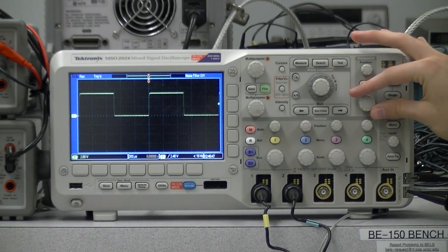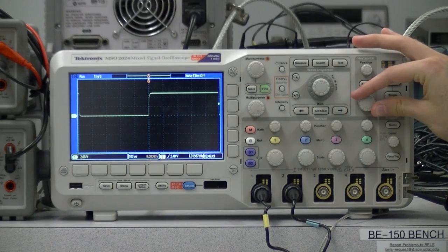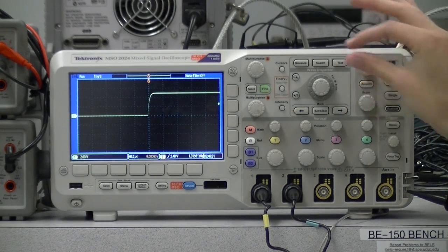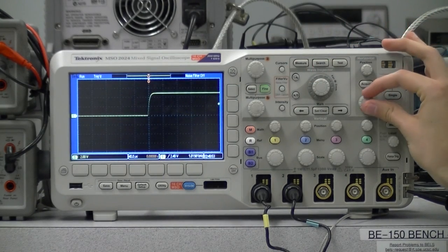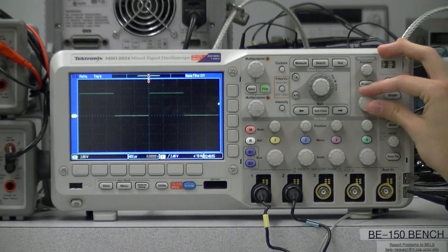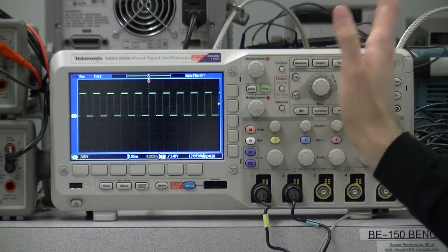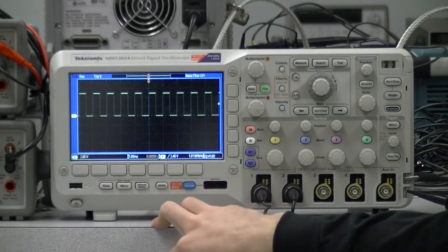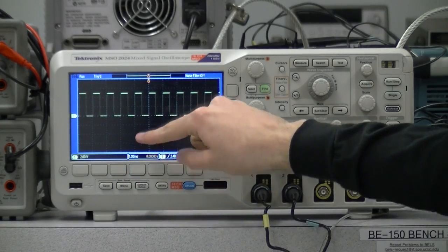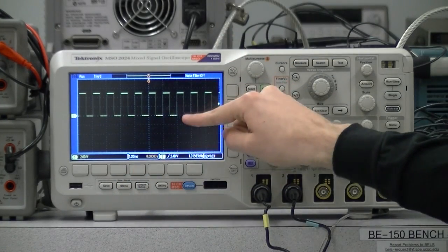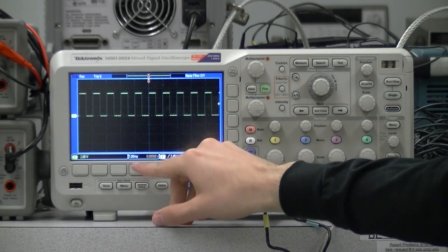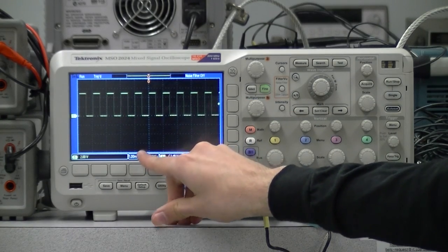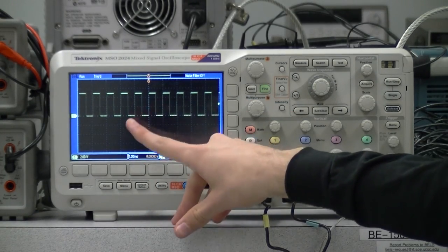Turning it this way reduces the amount of time per division, lengthening the apparent waveform. We can turn it the other way to increase the amount of time per division, shrinking the apparent waveform. We can now see that we have one cycle of this wave every one division, and that one division is one millisecond, so this is a one kilohertz square wave.